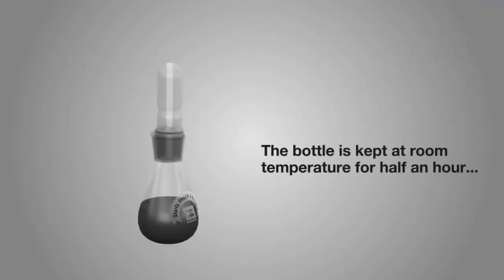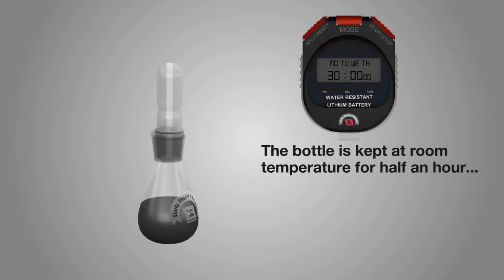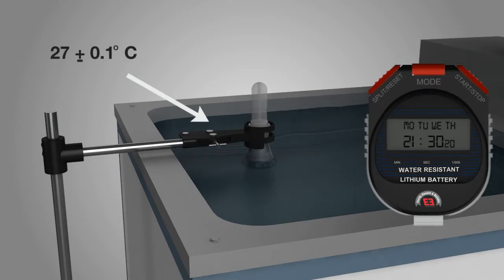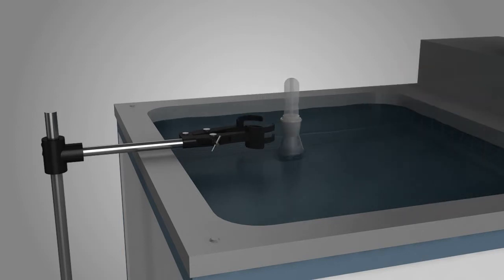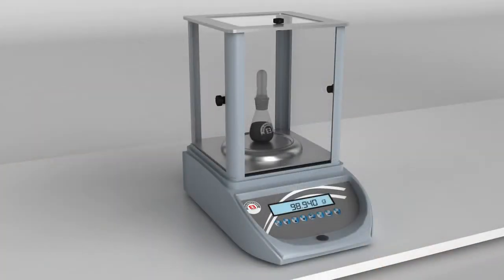The bottle is kept at room temperature for half an hour, thereafter it is cooled in water bath at 27 degrees Celsius for 30 minutes. Thereafter the bottle is removed from the water bath and its outer surface is wiped clean. Note down the weight of the specific gravity bottle about half filled with bitumen as C, which is equal to 98.940 grams.